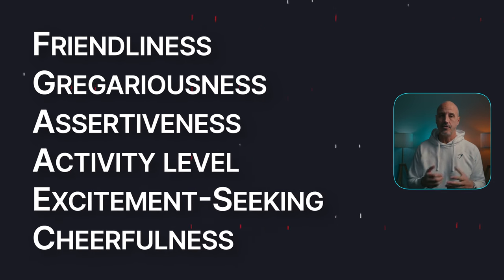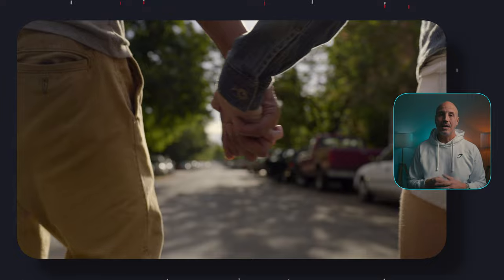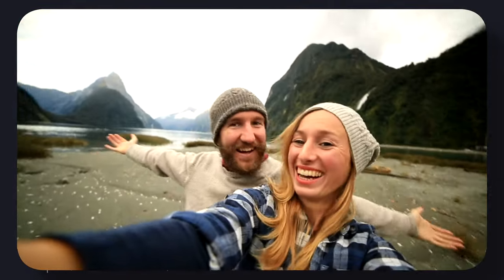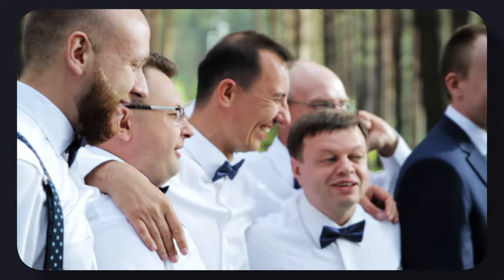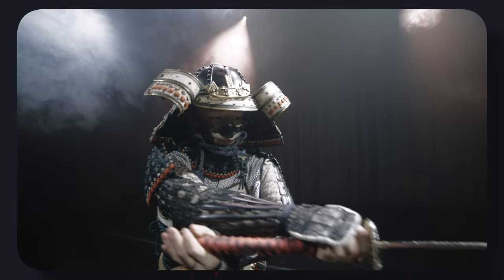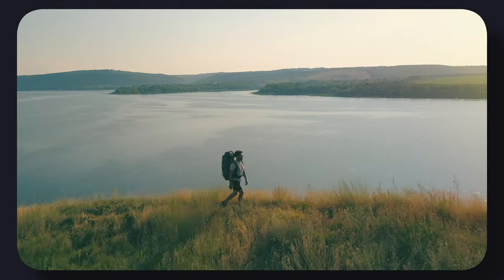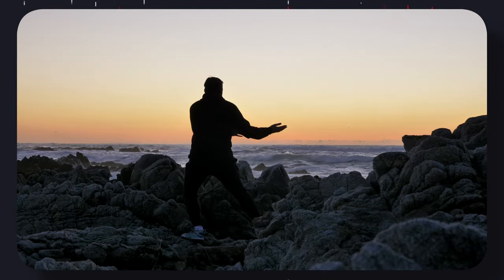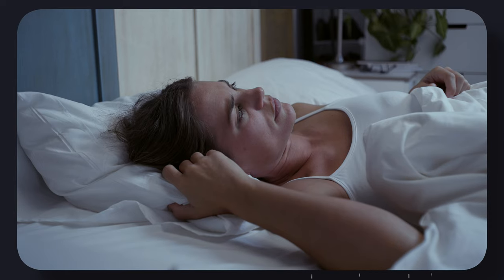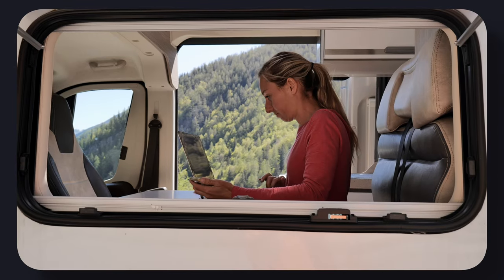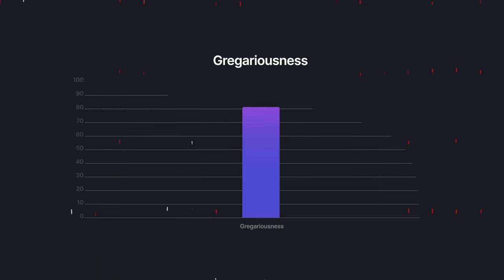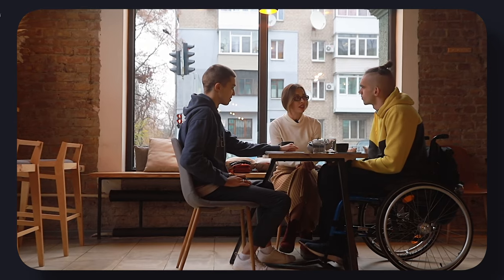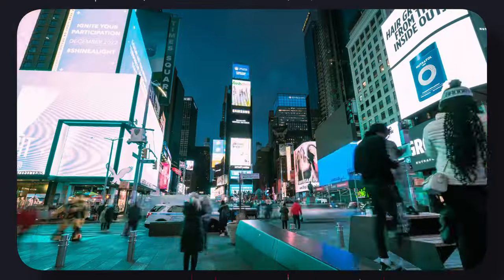Friendly people like other people and show positive feelings towards others. They make close, intimate relationships and friends easily. Those who are low in friendliness are not cold and hostile, but they do not reach out to others and you will perceive them as distant and reserved. Gregarious people find the company of others stimulating and rewarding.